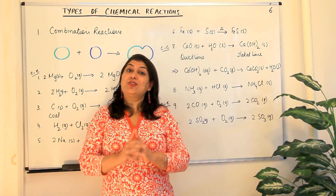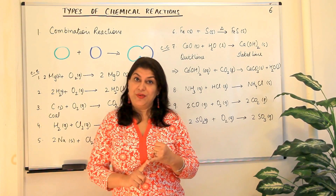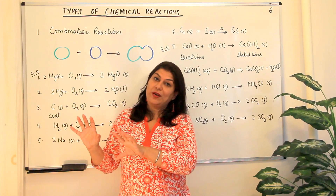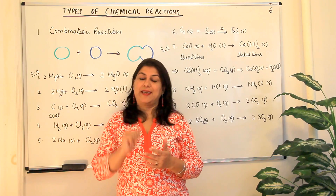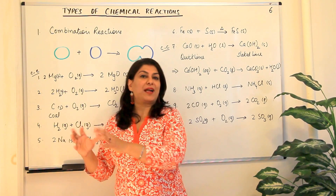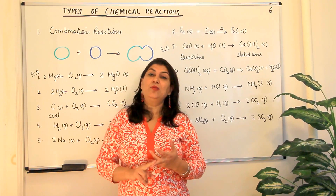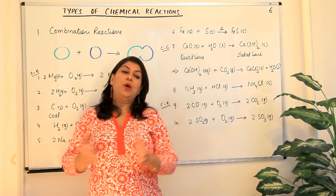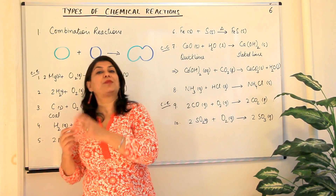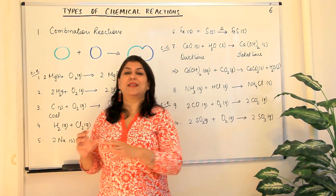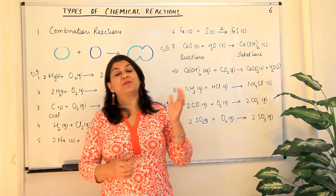In the previous video, I told you about the 5 types of chemical reactions. The first was combination reactions, where you have more than one reactant and one product is formed. Then we came to decomposition reactions, the second type, where you have one reactant and it breaks down to give you more than one product. And the third was displacement reaction, where one part of a reactant takes the place of another part of the reactant, displaces it from its original position.